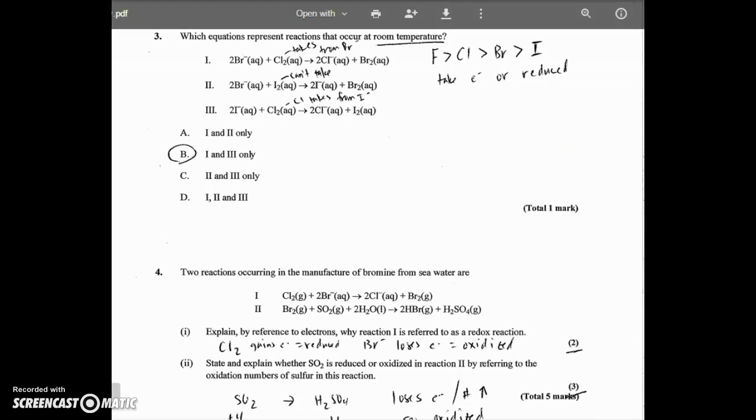So number 3 says, which equations represent reactions that occur at room temperature? And these are all halogens. So I've just written up in the corner here the reactivity of halogens. Fluorine's the most reactive than chlorine, bromine, and iodine. And remember, the halogens take electrons, or in other words, they're going to be reduced. And they're asking which ones occur at room temperature. Room temperature is another way of saying that they're exothermic. They don't require any energy being put in. Or another way they would say this is which of these are spontaneous.